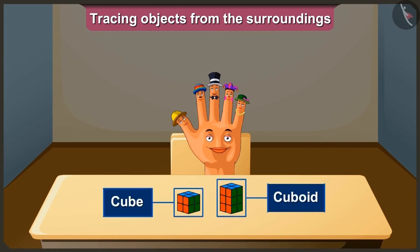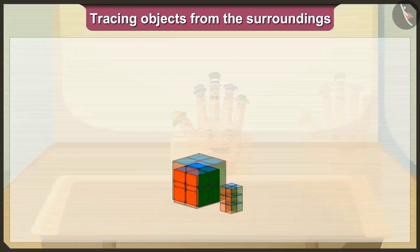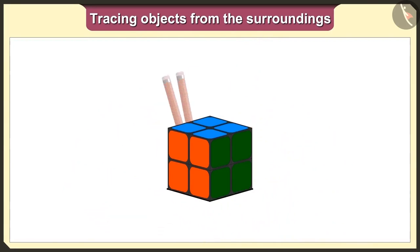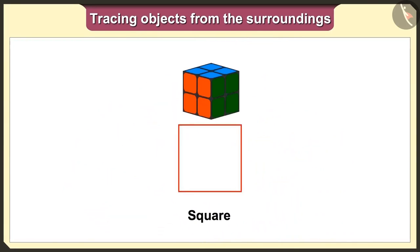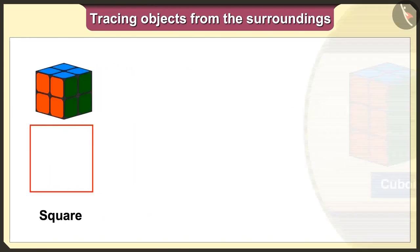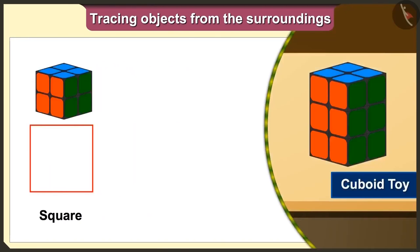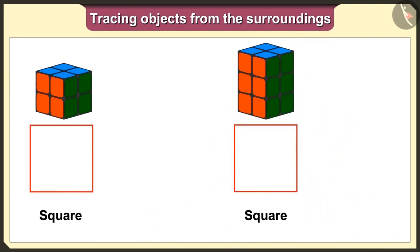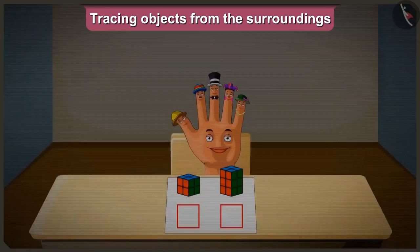Let's keep these toys on a paper and trace them. If we keep this cube toy on paper and trace it, then we will get a square shape like this. And if we keep this cuboid toy on paper and trace it, then we will also get a square shape like this.